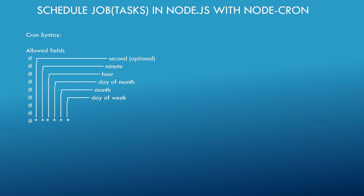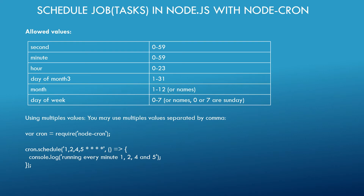This is the cron syntax. It has: second, minute, hour, day of month, month, and day of week. You can specify different values to schedule the job. The allowed values are: second 0–59, minute 0–59, hour 0–23, day of month 1–31, month 1–12, and day of week 0–7.